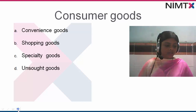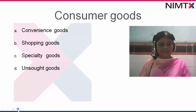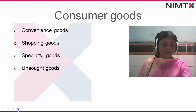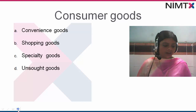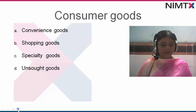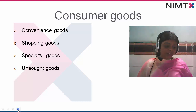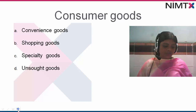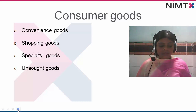Then shopping goods — these are goods that the customer in the process of selection and purchase characteristically compares on the basis of suitability and quality. Examples include furniture, kitchen equipment, electrical appliances, and clothing. Specialty goods are goods with unique characteristics or brand identification, for which a sufficient number of buyers are willing to make a special purchasing effort. Examples include apartments, cars, jewelry, greeting cards, and gift articles.